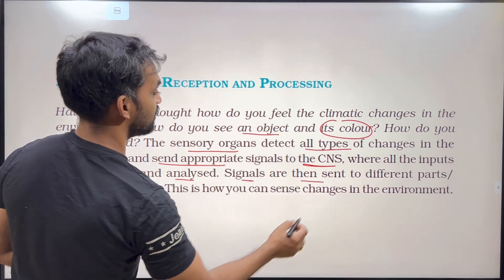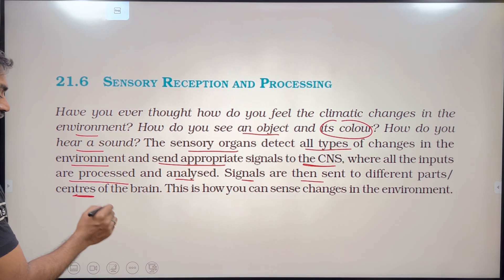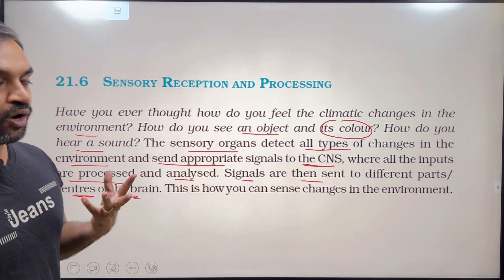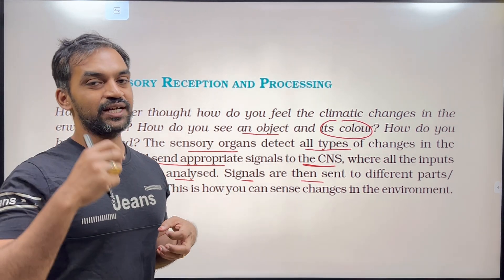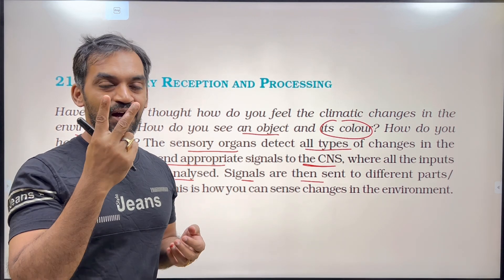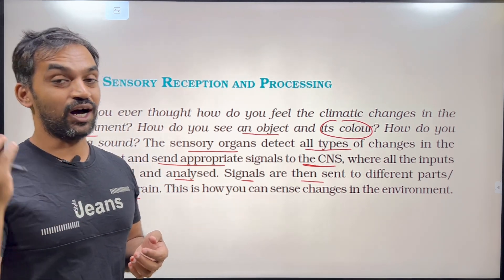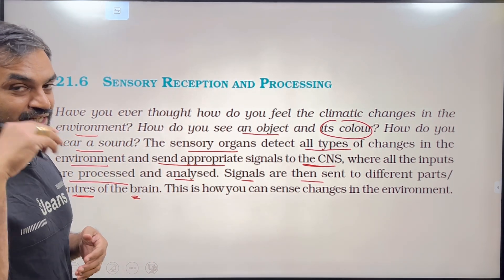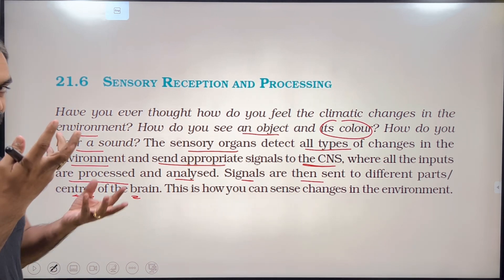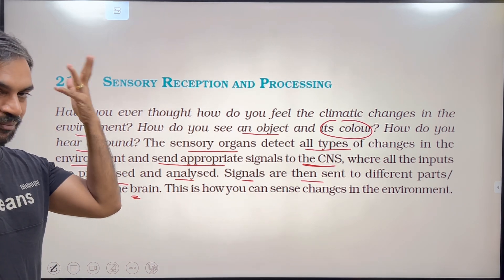Signals are then sent to different parts or centers of the brain. There is smell, taste, vision — all processed by the brain. Sensory organs send information to the CNS, and the CNS processes it at particular centers.